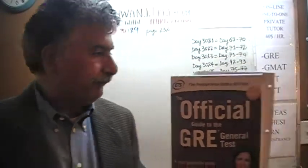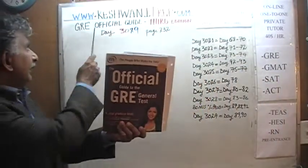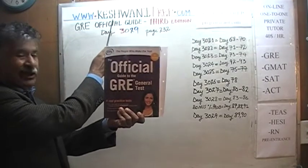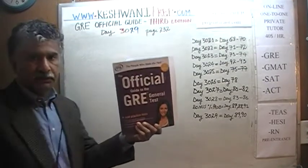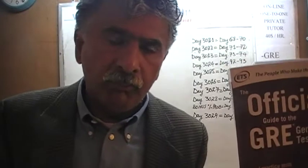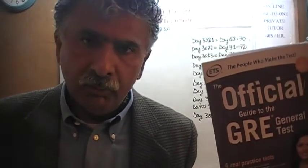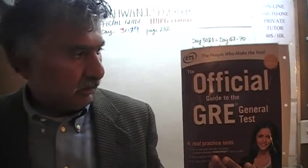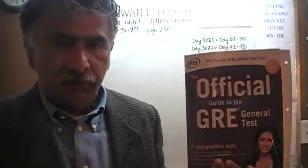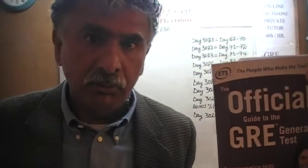My name is Keswani — that's K-E-S-H-W-A-N-I. We are here because we want to prepare for the GRE. We have been solving math problems out of this book, the Official Guide to the GRE, the third edition. If you do not own this book already, purchase it immediately. You are going to need it.